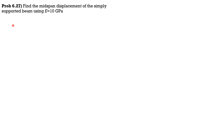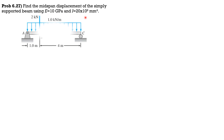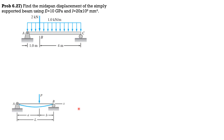Here is the first problem on the superposition method: find the mid-span displacement of the simply supported beam using modulus of elasticity of 10 GPa and moment of inertia 20 × 10⁶ mm⁴. For the mid-span deflection due to a concentrated load not at center, the formula is PB over 48EI times (3L² − 4B²) if A is greater than B. In the figure, A is 4 and B is 1.